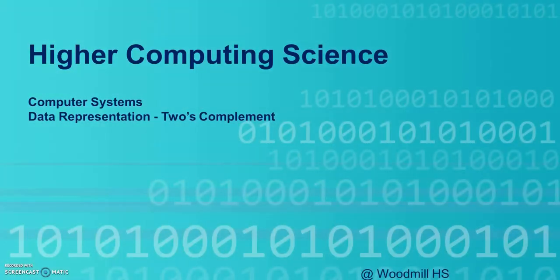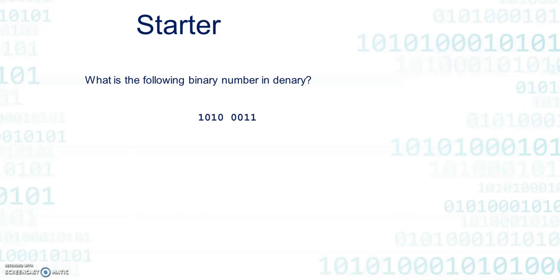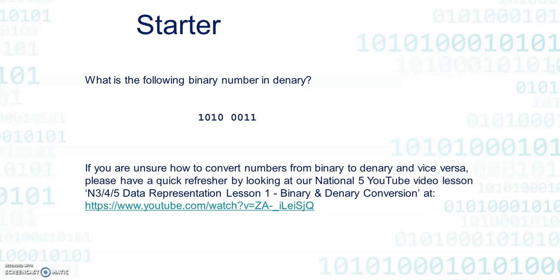Hello and welcome to your next lesson in Higher Computing Science here at Woodmill High School. We're continuing with the Computer Systems Unit and looking at data representation and something called two's complement. Your starter: what is the following binary number in denary? You might want to pause this video and go get a pen and paper to work that out. If you're unsure how to convert numbers from binary to denary, please have a refresher by looking at our National 5 YouTube video lesson N3405 Data Representation Lesson 1 Binary and Denary Conversion.